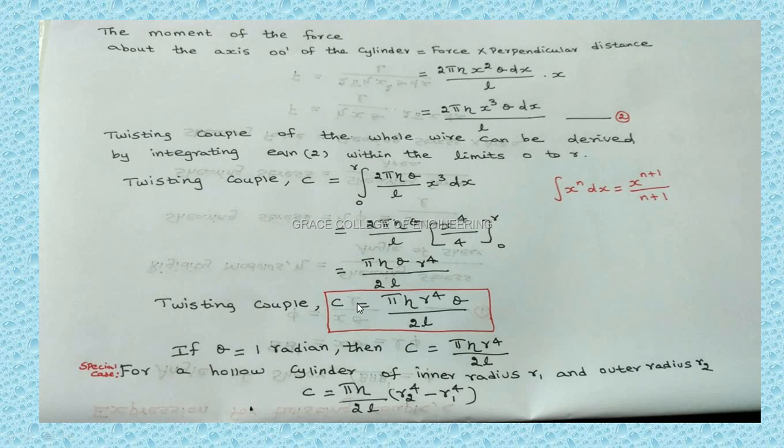This is the twisting couple of a wire. Suppose the angle theta is 1 radian, if it is per unit twist, then C equals pi eta R to the power 4 by 2L. This is the couple per unit twist of the wire. General formula: C equals pi eta R to the power 4 theta by 2L. Couple per unit twist: C equals pi eta R to the power 4 by 2L.